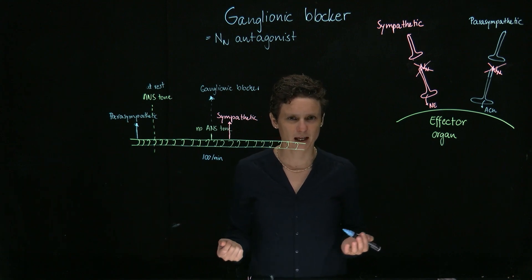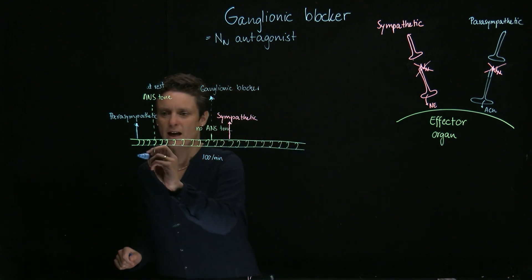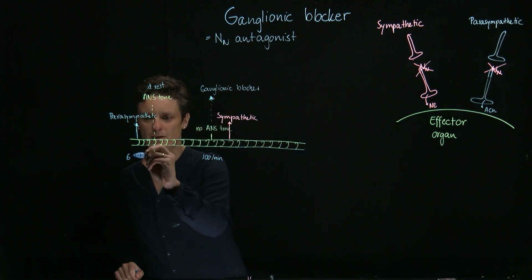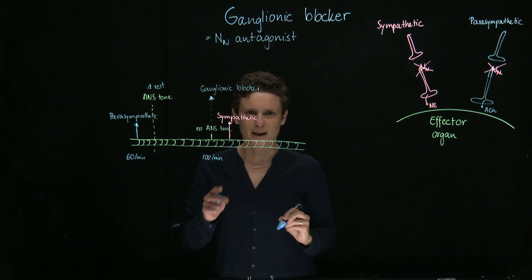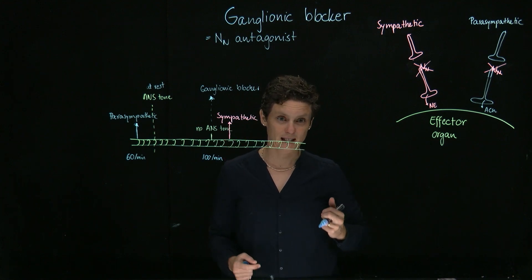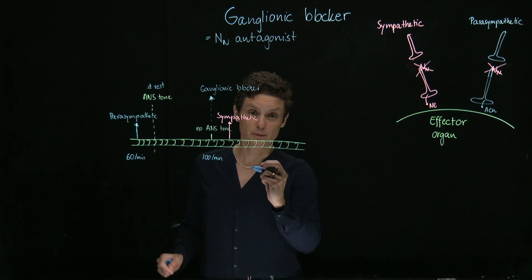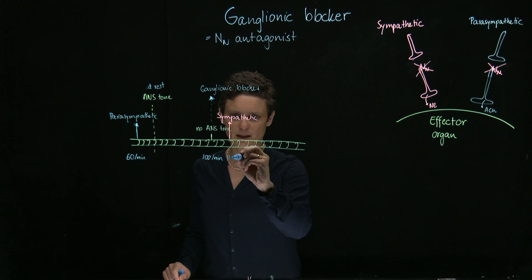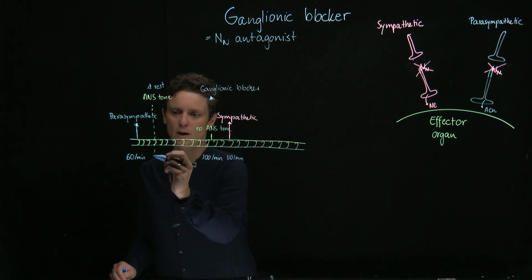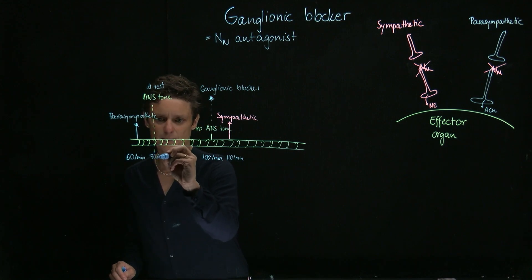The parasympathetic lowers heart rate. Probably, if we would have only parasympathetic input, we would end somewhere at 60 beats per minute. But actually, the sympathetic increases heart rate. With only sympathetic tone, we would be probably at 110 beats per minute. So what's our resting heart rate? Well, it's about 70 beats per minute.